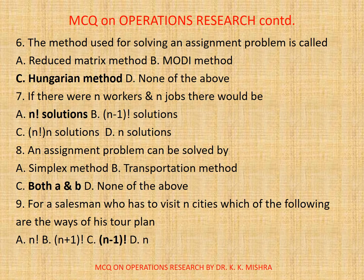Question 6. The method used for solving an assignment problem is called: A. Reduced matrix method. B. Modi method. C. Hungarian method. D. None. The correct option is C: Hungarian method. By and large, there are other methods also. Theoretically, the assignment problem can also be solved by transportation or simplex methods, but practically it is not possible. If the number of tasks is limited, say only 2 or 3, then complete enumeration method can be applied. Otherwise, by and large, Hungarian method is used.